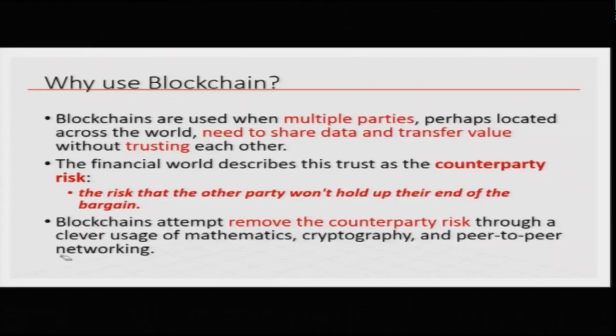Earlier, in the Bitcoin context, we said it is about generating cryptocurrency and making transactions of cryptocurrencies — double spending proof and all that. Now we are saying that blockchains are to be used when multiple parties, perhaps located across the world, need to share data and transfer value without trusting each other. We are bringing in data sharing as a key reason, and transfer of value which may mean transfer of properties, assets, or cryptocurrencies. So this is more generic than what Bitcoin was doing.